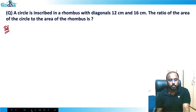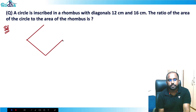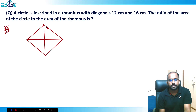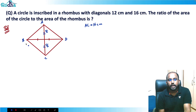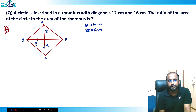In any rhombus, the diagonals bisect each other at 90 degrees, but their lengths are not equal. So the figure has diagonals AC = 16 centimeters, giving half-lengths of 8 and 8, and diagonal BD = 12 centimeters, giving half-lengths of 6 and 6.